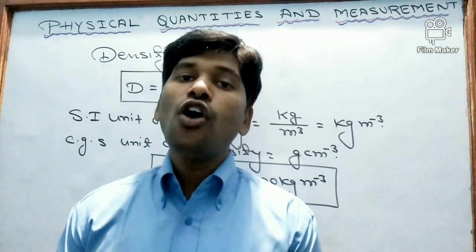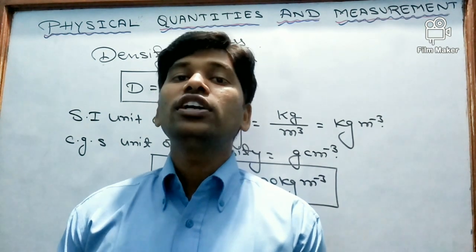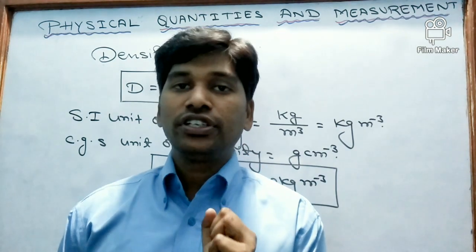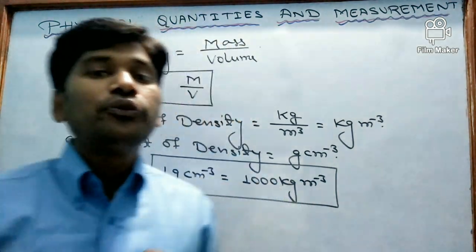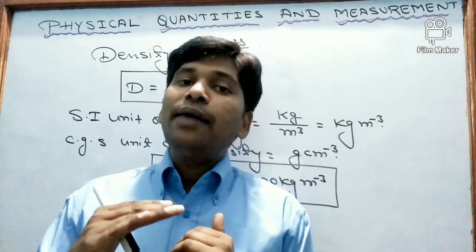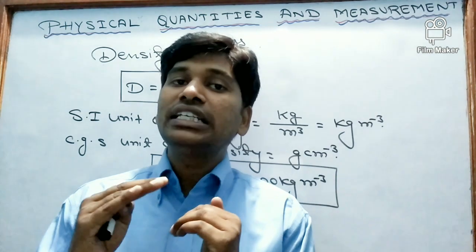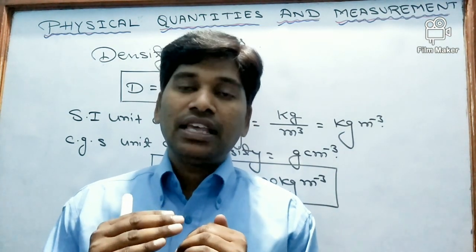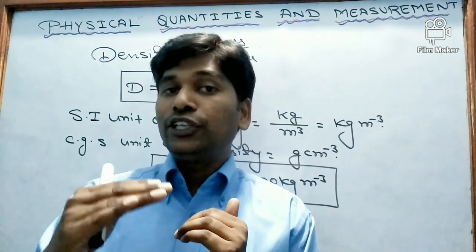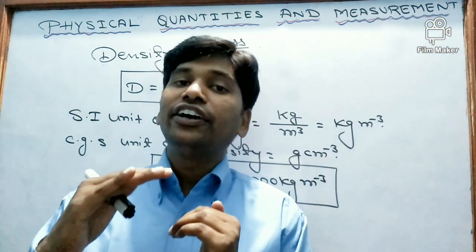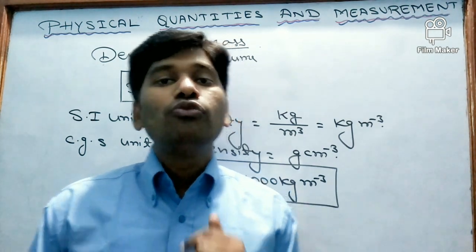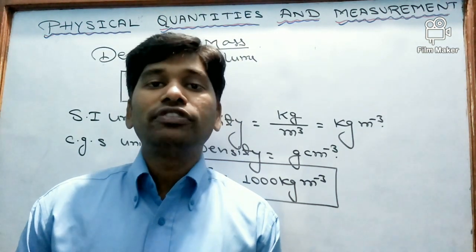Now let us see how we can determine the density of a regular solid. Regular solids are those which have a fixed shape, like a cube or cuboid. For finding the density, we need two physical quantities: mass and volume. Mass of a body can be determined using a physical balance. Volume can be determined by formula — for a cube it is l³, and for a cuboid it is length times breadth times height. After getting mass and volume, we divide mass by volume to get the density of the body.